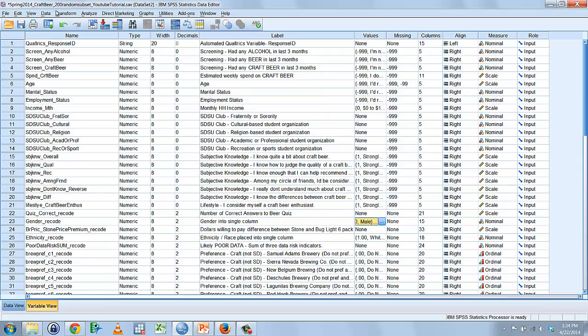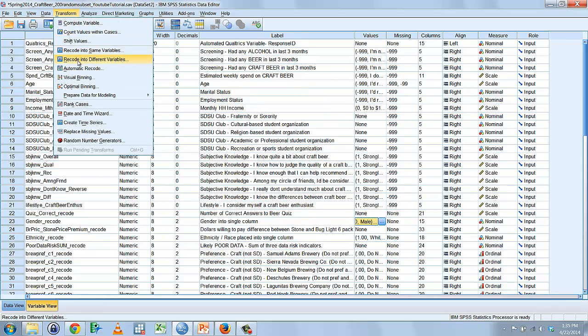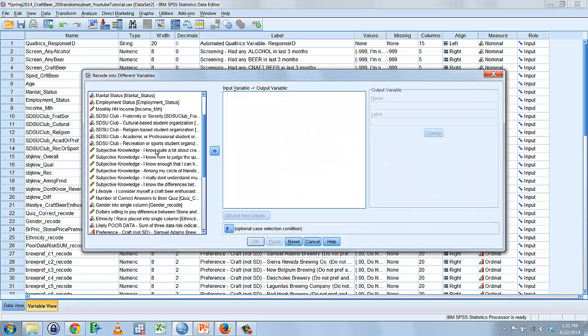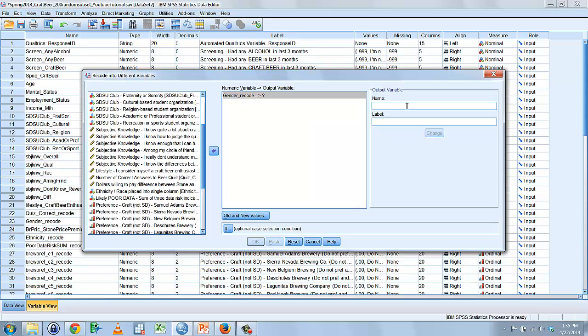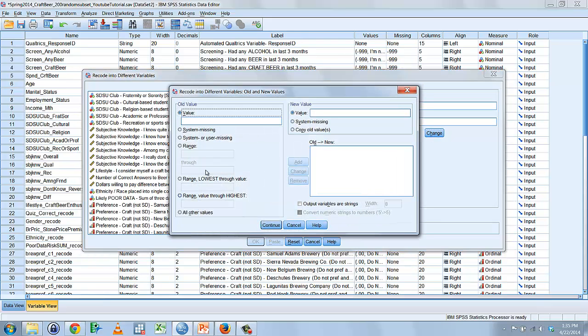You should remember that we can do this easily using recoding into different variables. So we're going to transform, recode into different variables. We will select our gender recode variable. Make a new variable called gender dummy. Hit change. Old and new values. So if males are one, they'll stay as a one. If the value of two is an old value, which is females, we're now going to code them as zeros. And since it's nominal data, we can code them the new numerical system we want. But we'll see in a second why ones and zeros are particularly useful.